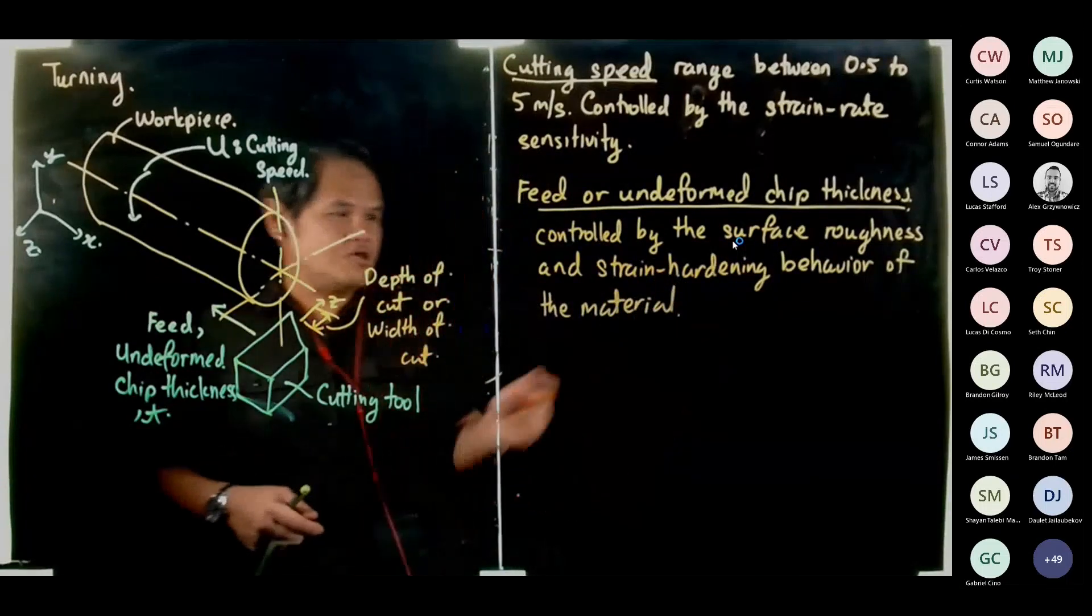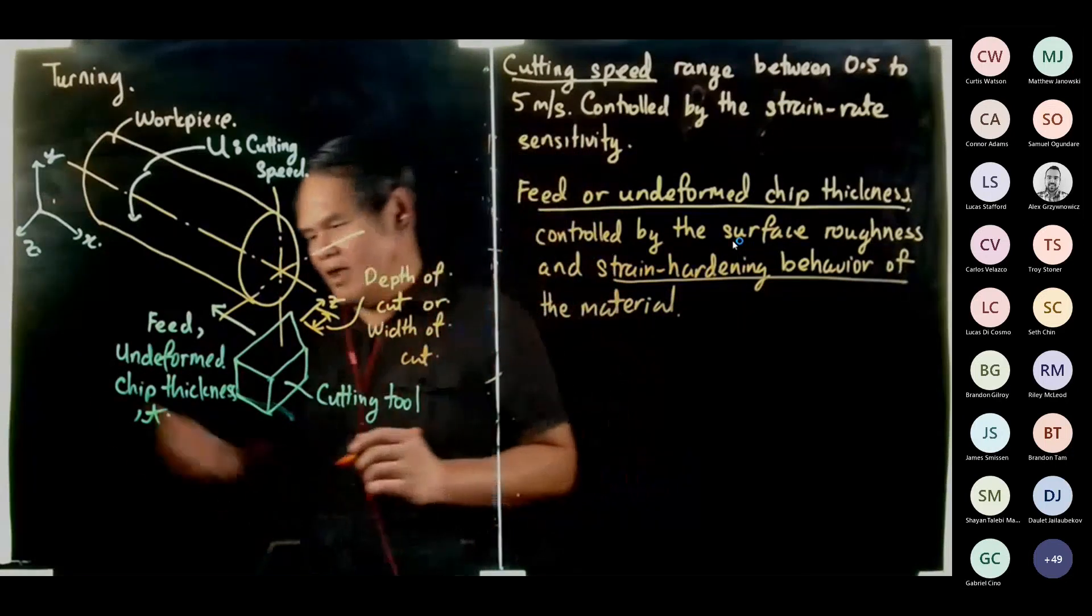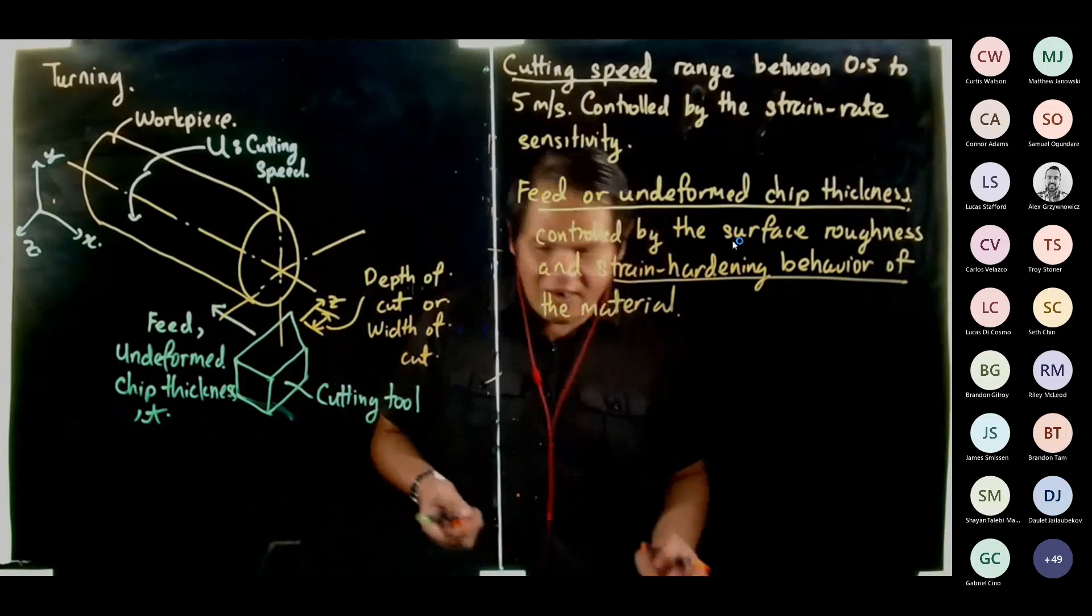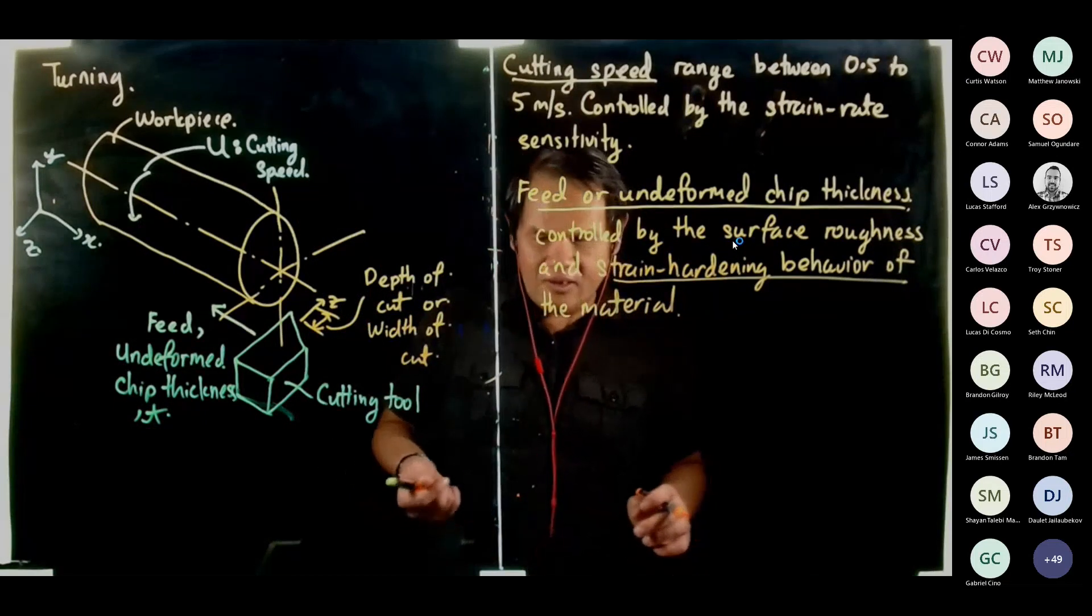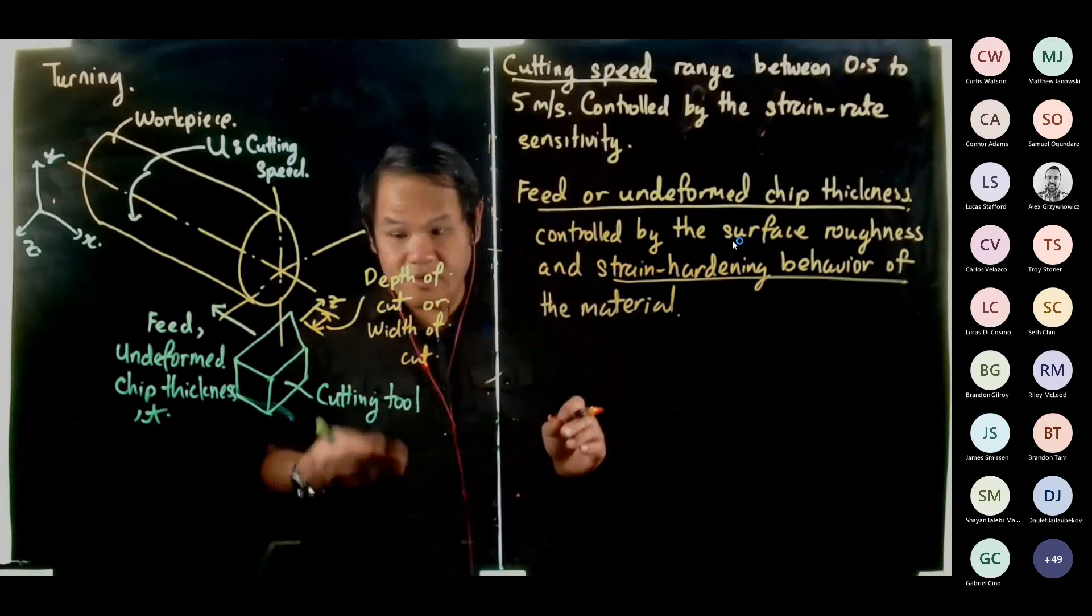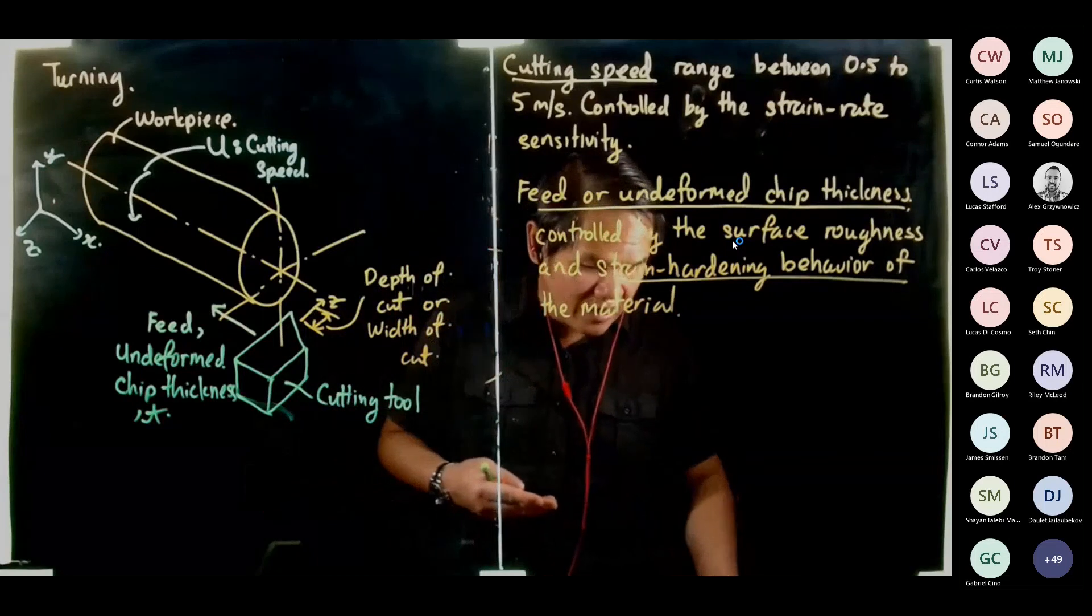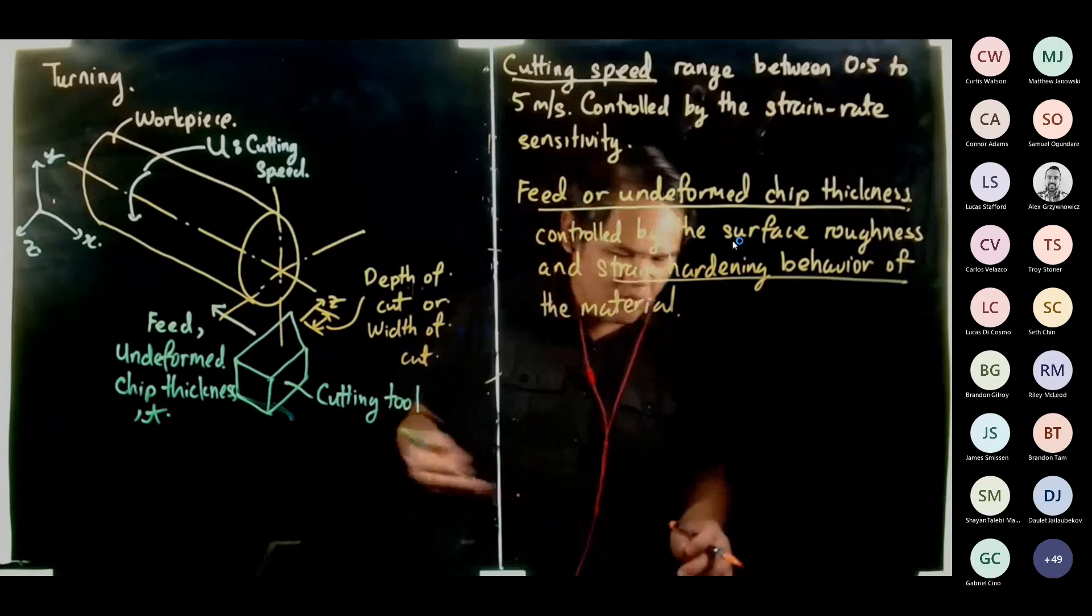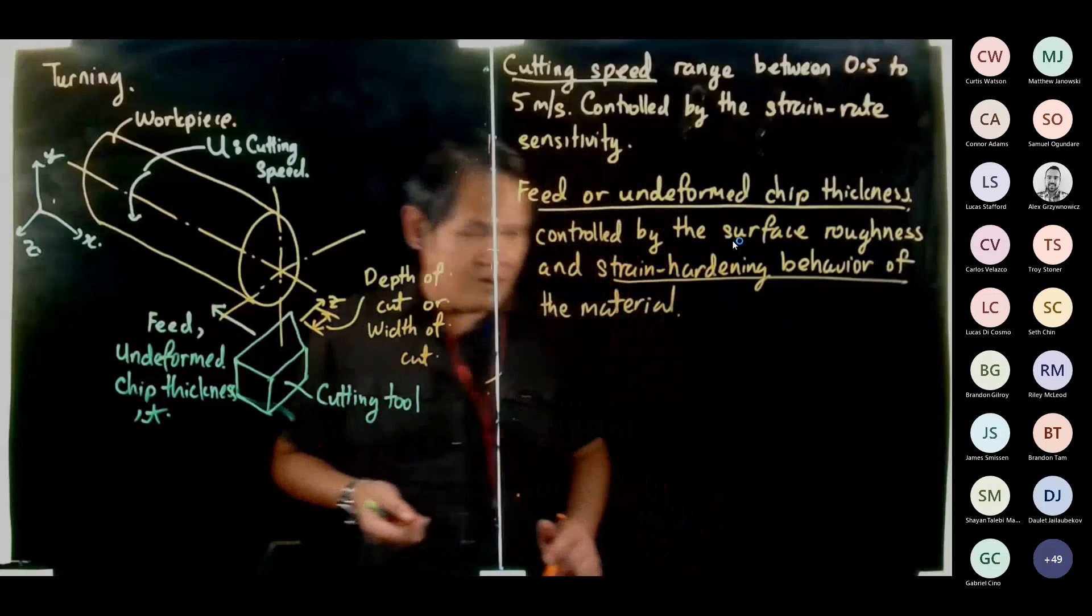Strain hardening behavior—this is your Johnson-Cook: A, B, and n. Sometimes later on we'll talk about this. When a material is strain hardening sensitive, sometimes you have to take off more material. I don't know whether I have time to go to that or not.